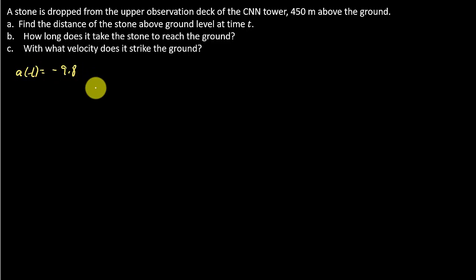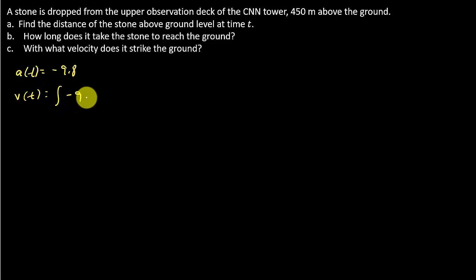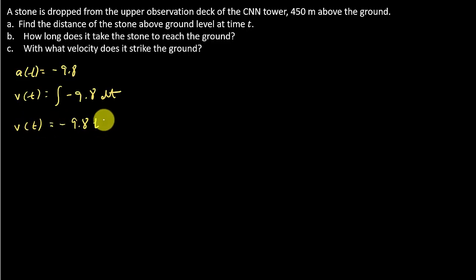We need s, the position function. If we have the acceleration and we integrate it, that will give us the velocity function. So the velocity function is the integral of the acceleration function, meaning our velocity is negative 9.8t plus C. Don't forget when you integrate, you've got to put that constant C. But what good does this do us? We have this variable C and we don't know what it is.